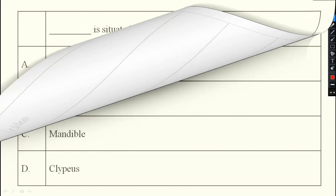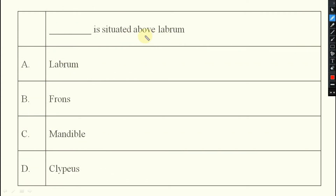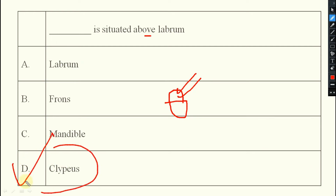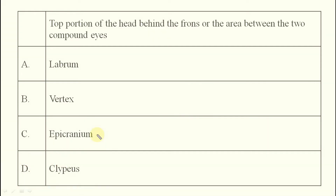Next question: which structure is situated above the labrum? Above labrum there is one more small sclerite. The answer is option D — clypeus is situated just above the labrum.